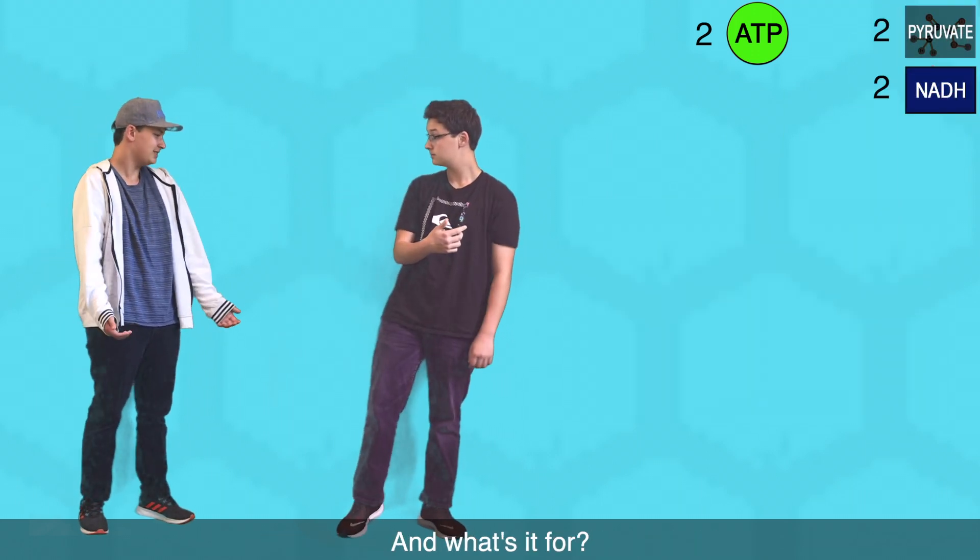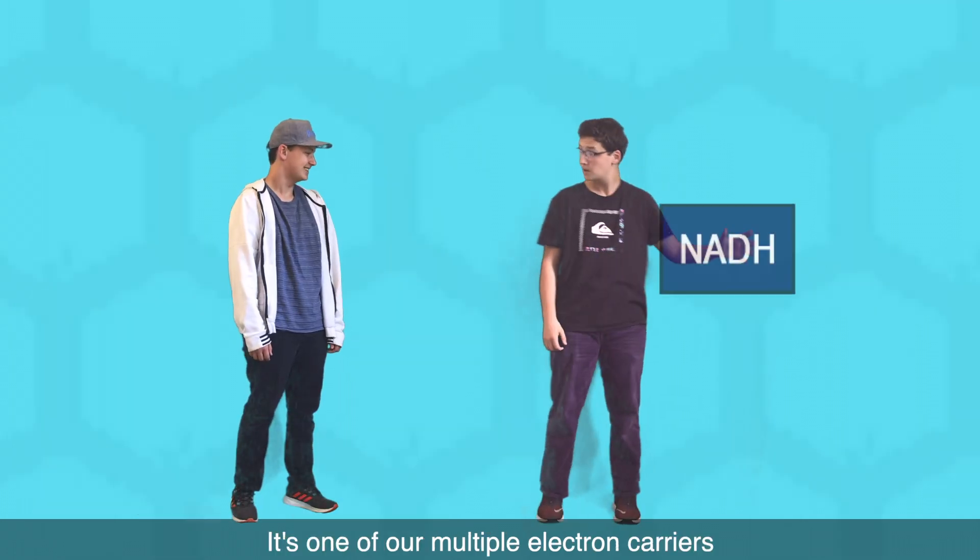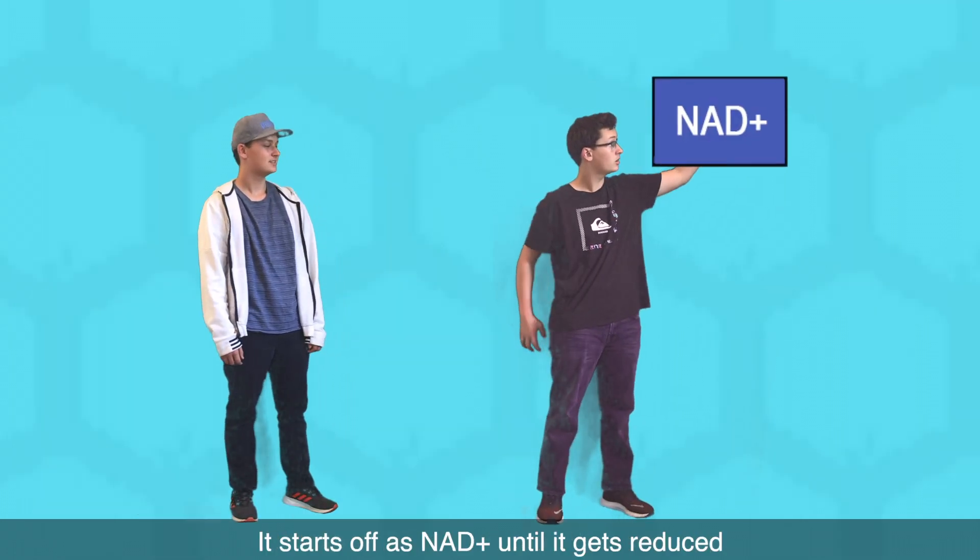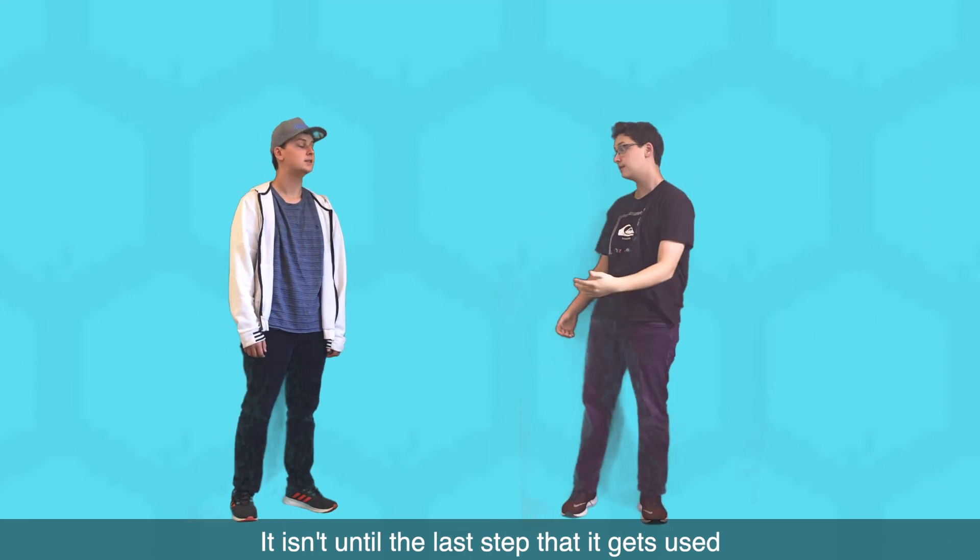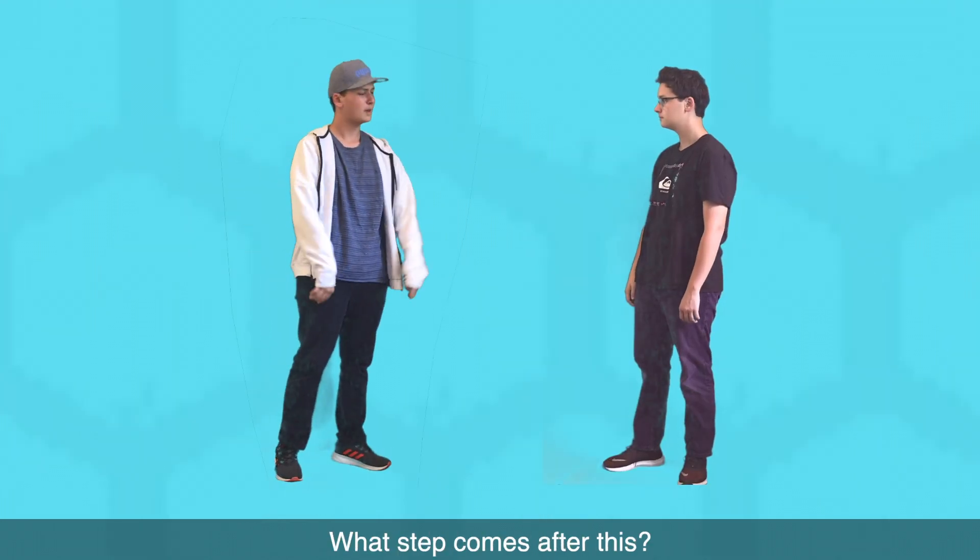Wait, what's NADH? And what's it for? It's one of our multiple electron carriers. It starts off as NAD+ until it gets reduced. It isn't until the last step that it gets used. Alright, I think I get it. What step comes after this?